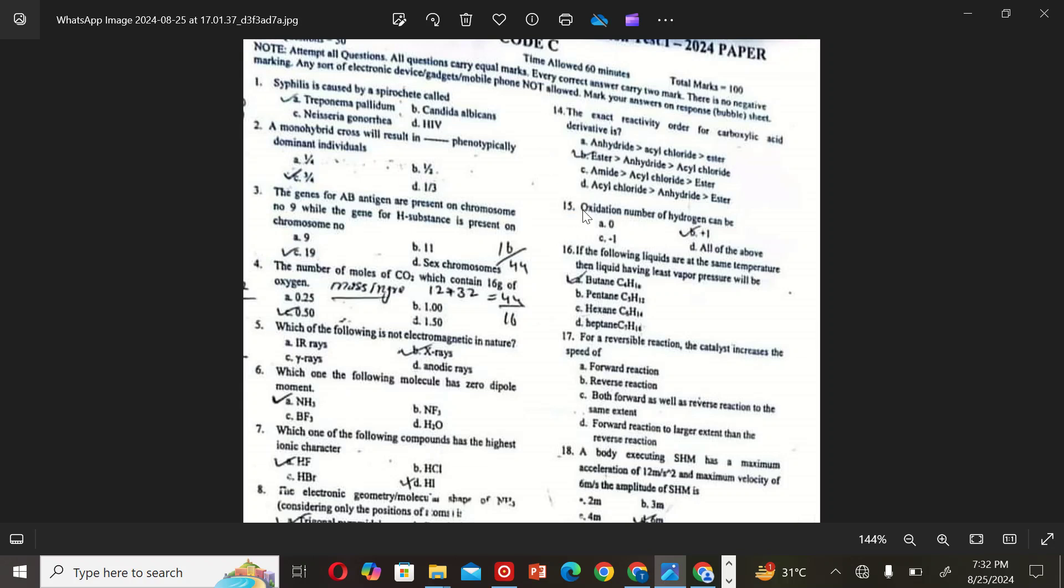The next MCQ is: Oxidation number of hydrogen can be? The correct option is B, plus one. The next MCQ is: Of the following liquids at the same temperature, the liquid having least vapor pressure will be: butane C4H10, pentane C5H12, hexane C6H14, and heptane.